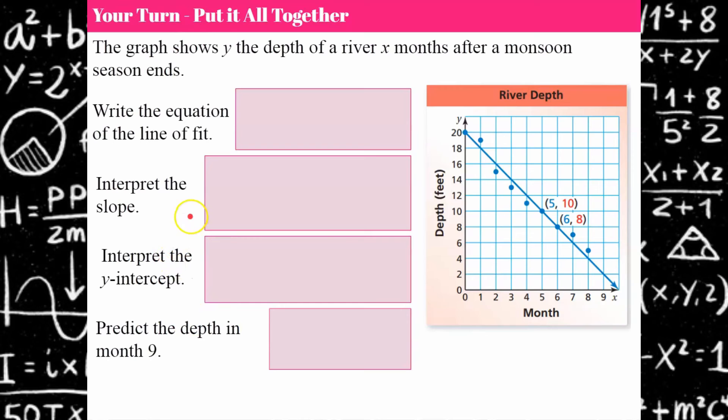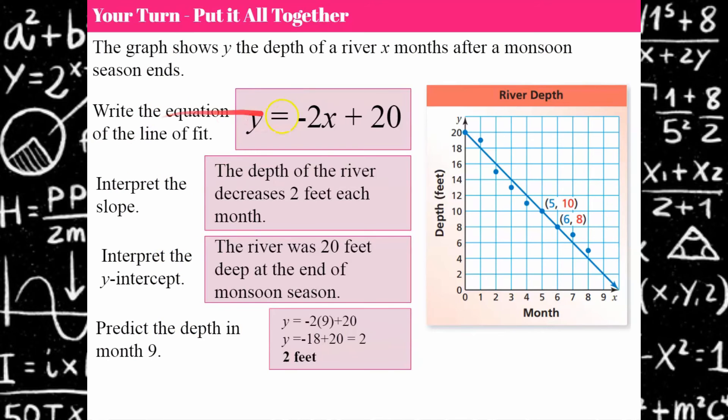Welcome back, let's see how you did. So we're going to go ahead and write the equation of the line of fit. So 10 minus 8 is 2 all over 5 minus 6 which is negative 1 giving me a negative 2 slope.